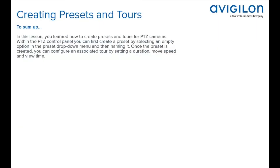In this lesson, you learned how to create presets and tours for PTZ cameras. Within the PTZ control panel, you can first create a preset by selecting an empty option in the preset drop-down menu and then naming it. Once the preset is created, you can configure an associated tour by setting a duration, move speed, and view time.